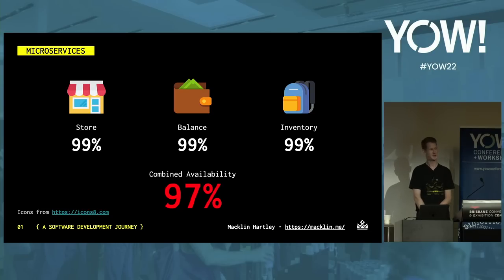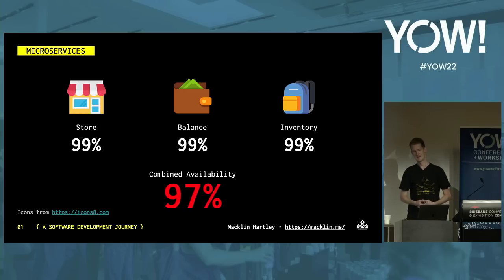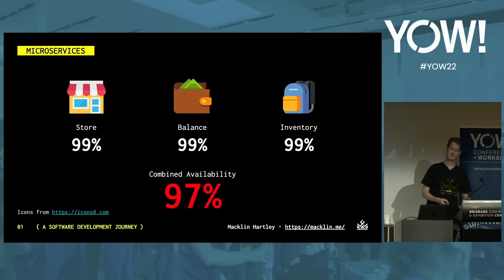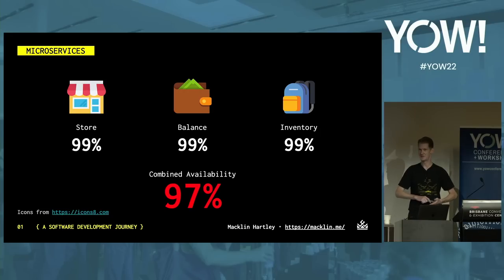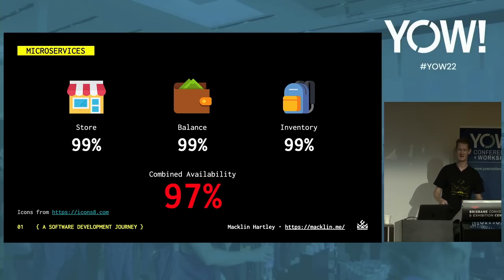This means we have what is called an availability coupling — this workflow needs all three services to be available at the same time. If each service has a 99% availability, the availability of the workflow as a whole is a multiplication of all three availabilities, which turns out to be 97%. 97% might be great in university — that's a high distinction — but in our case, that means this system can be down for as many as 11 whole days per year. Imagine if Netflix is down for 11 whole days per year. And it actually gets worse the more services we add.